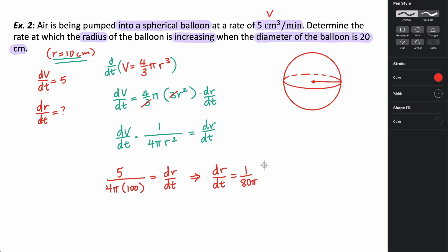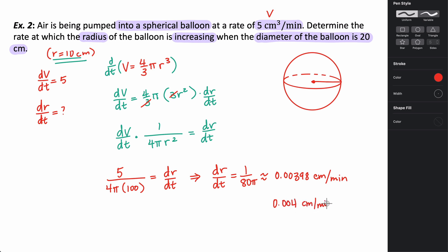That simplifies to one over 80π. Plugging into a calculator, 1 divided by 80π gives approximately 0.00397 or 0.00398. Since we're talking about the radius, which is a linear measure, our units are centimeters per minute. Rounding to three decimal places, this is approximately 0.004 centimeters per minute, or you could truncate to 0.003 centimeters per minute.